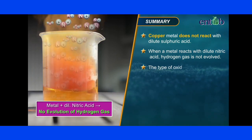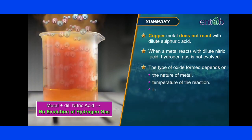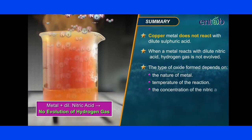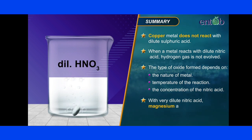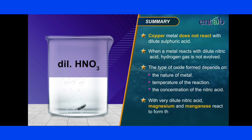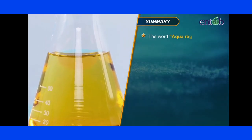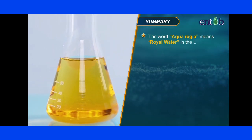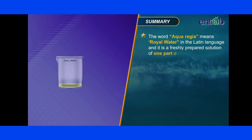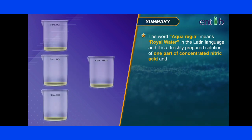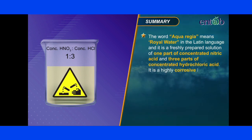The type of oxide formed depends on the nature of the metal, temperature of the reaction and the concentration of the nitric acid. With very dilute nitric acid, magnesium and manganese react to form their nitrates and hydrogen gas is evolved. Aqua Regia means 'royal water' in Latin and is a freshly prepared solution of one part of concentrated nitric acid and three parts of concentrated hydrochloric acid. It is a highly corrosive liquid.